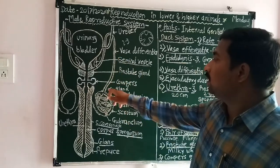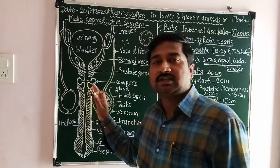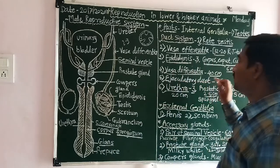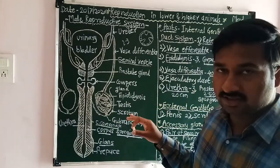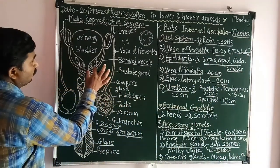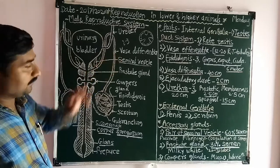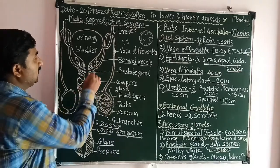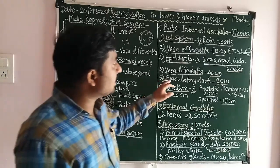The vas deferens conducts sperm from the cauda epididymis to the ejaculatory duct. The ejaculatory duct is a small duct about two centimeters in length and is a paired structure. It starts from the duct of the seminal vesicle and the vas deferens joining to form a tubular structure which opens into the prostatic urethra.